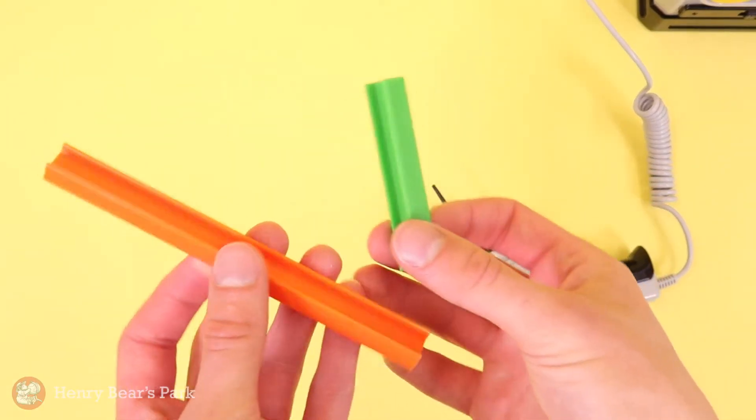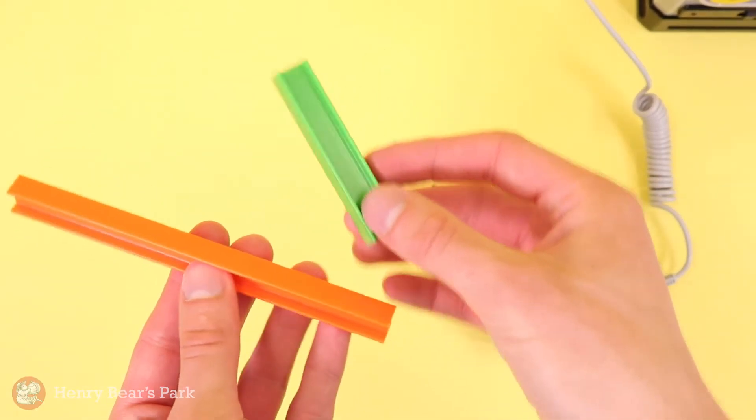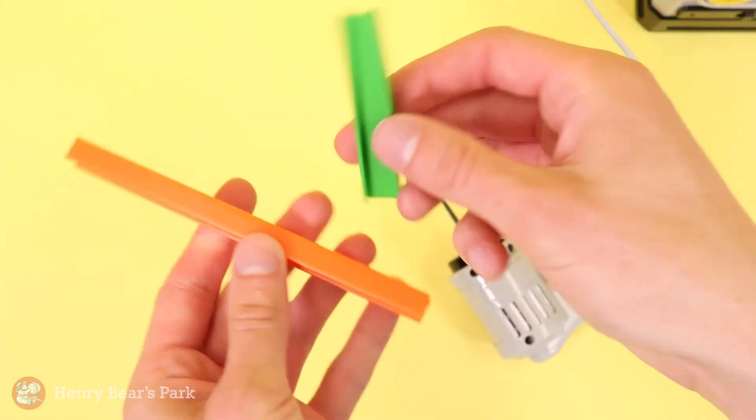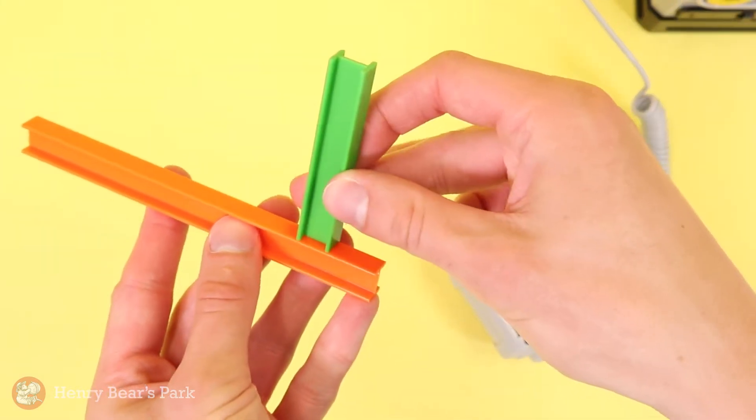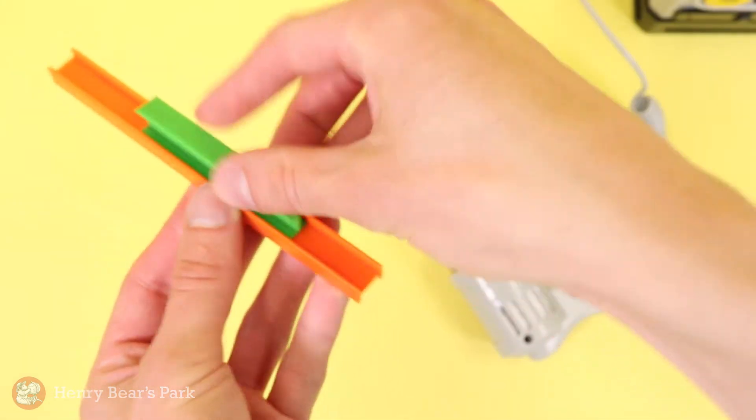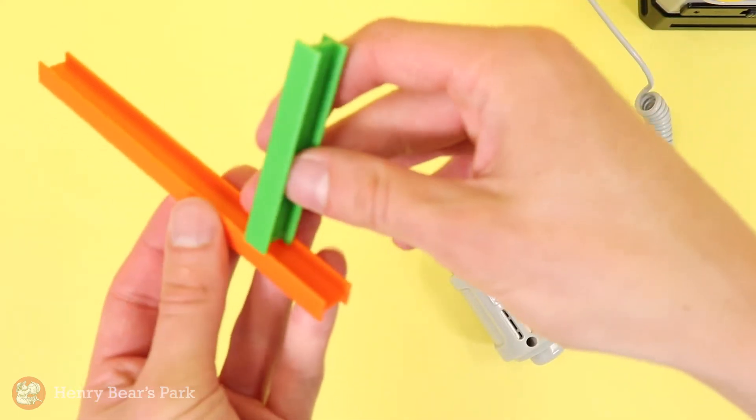As you're building your structure, remember that there are four beam connections. There's the side-to-side weld, end-to-side weld, side-to-groove weld, and end-to-groove weld.